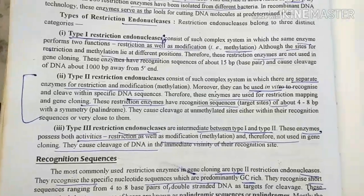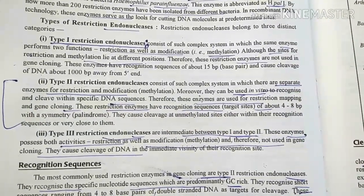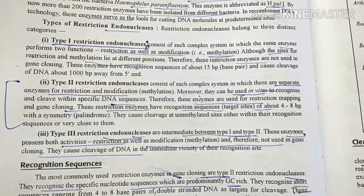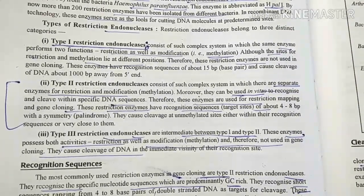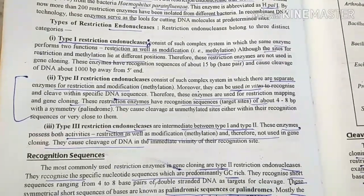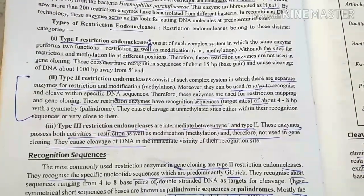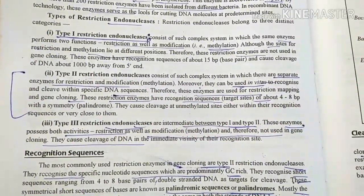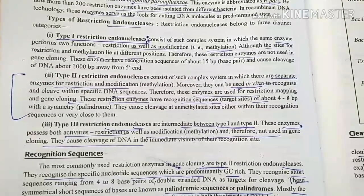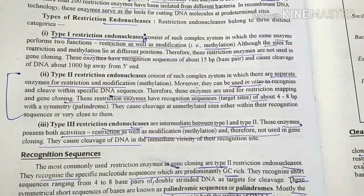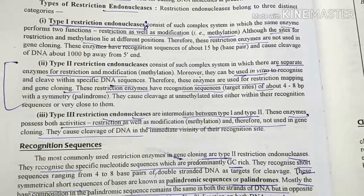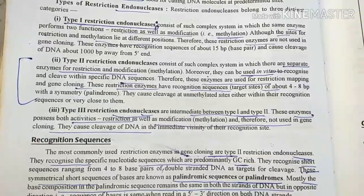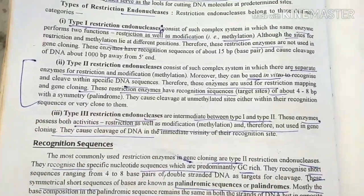Type 1 enzymes function for both restriction as well as modification, although the site of restriction and methylation differ, so these restriction enzymes are not used in genetic engineering. We use types 1, 2, and 3 in genetic control for base cleavage. These enzymes both activate restriction and modification. Type 2 is used in gene cloning.